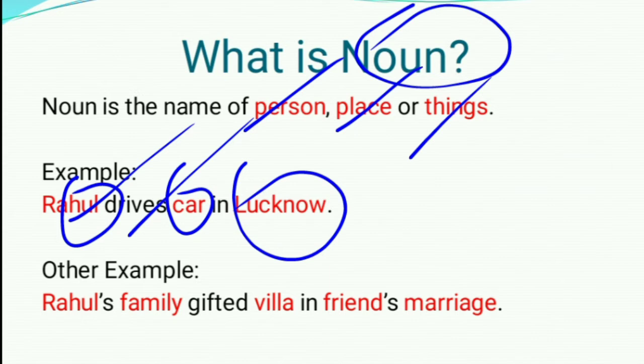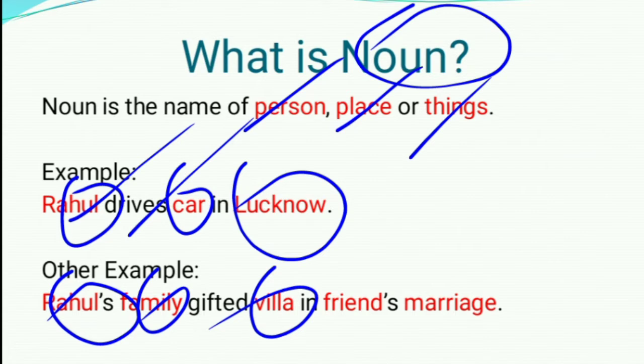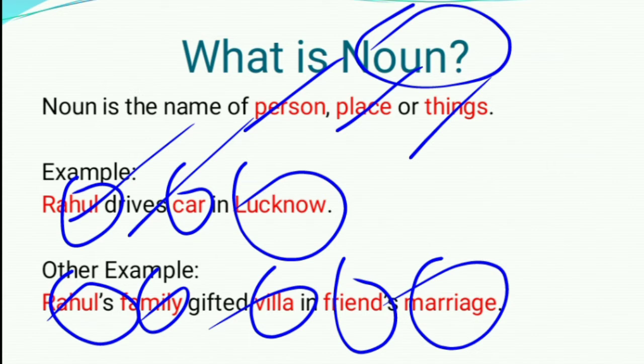Other examples we can see. Rahul's family gifted villa in friend's marriage. Here the words in red color — Rahul's family, villa, friends and marriage — they all are nouns.